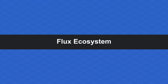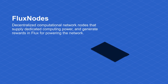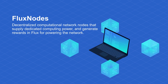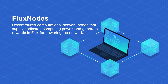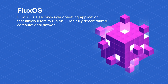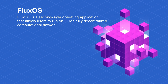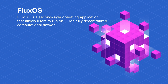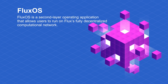Flux ecosystem. Flux Nodes are decentralized computational network nodes that supply dedicated computing power and generate rewards in Flux for powering the network. Flux OS is a second-layer operating application that allows users to run on Flux's fully decentralized computational network. Once deployed, Flux OS ensures all nodes are running properly and communicating throughout the network.